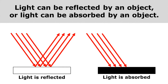Light can be reflected by an object or light can be absorbed by an object. On the left, you see light being reflected — it's bouncing off that surface. But on the right, you see that instead of the light bouncing off the surface or even going through the object, that light energy is actually being absorbed by the object.